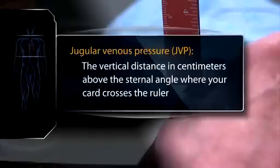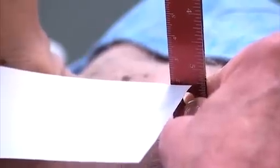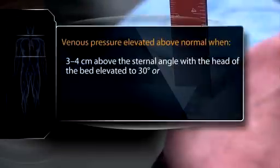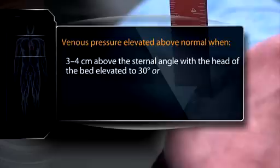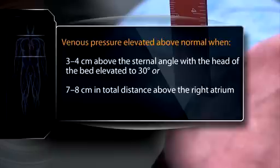Read the vertical distance where the card crosses the ruler. This measurement identifies the jugular venous pressure, or JVP — the vertical distance in centimeters above the sternal angle where your card crosses the ruler. Round your measurement off to the nearest centimeter. In this patient, the JVP is about 2 centimeters above the sternal angle. Venous pressure is elevated above normal when it measures at greater than 3 to 4 centimeters above the sternal angle, with the bed elevated to 30 degrees, or more than 7 to 8 centimeters in total distance above the right atrium.